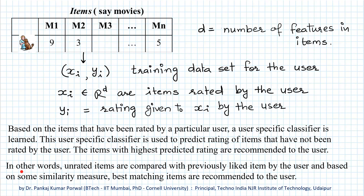In other words, what we are doing is comparing the unrated items with previously liked items by the user, and based on some similarity measure, the best matching items are recommended to the user. Because we are using the content or features of the item to find similarity between items, this is called content-based filtering.